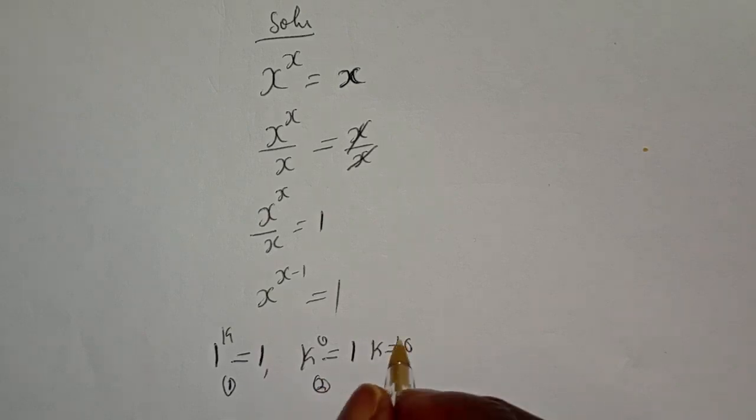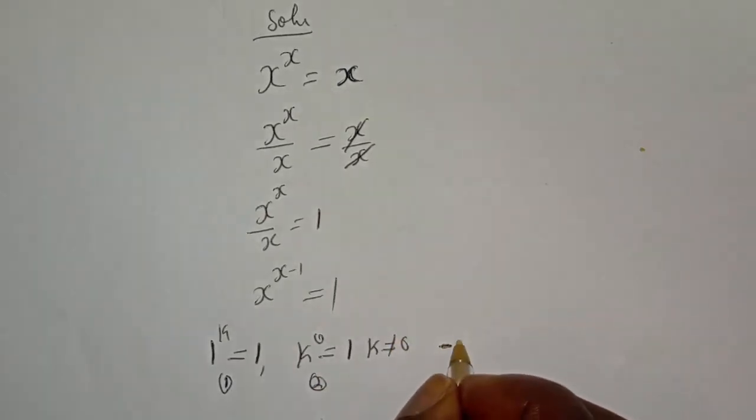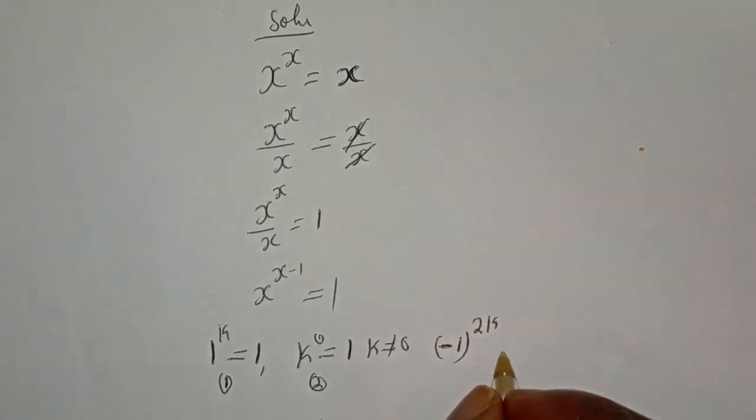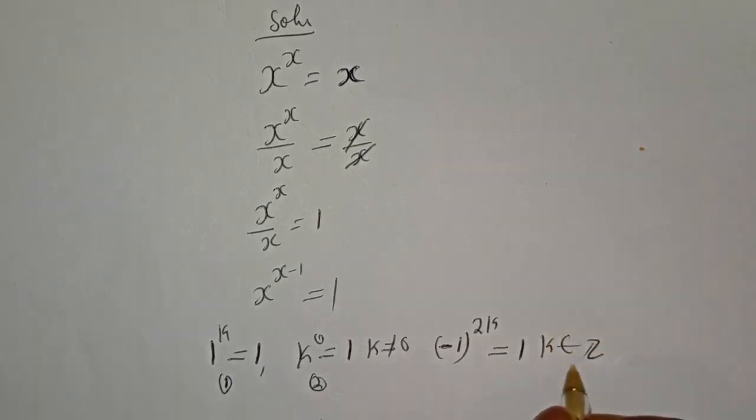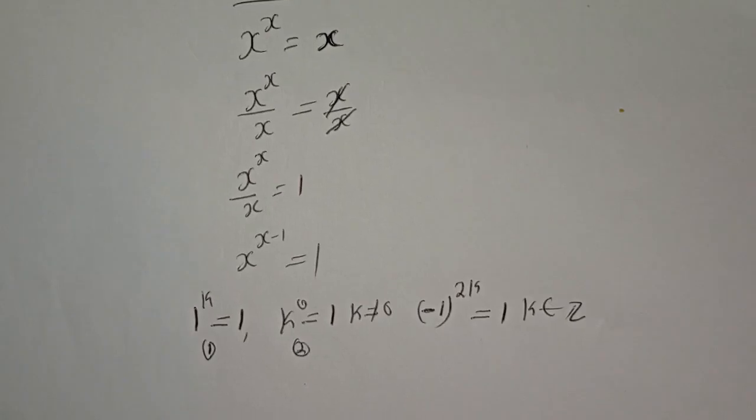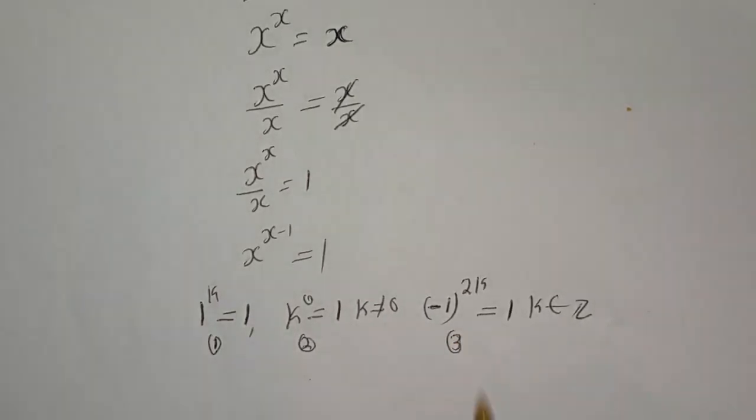And let's consider this. If you have minus 1 to the power of 2k, this is equal to 1, where k is a member of Z, then this is the third case.